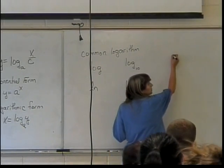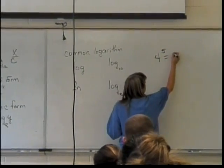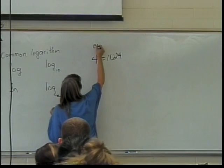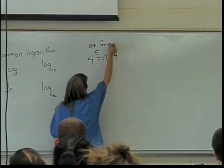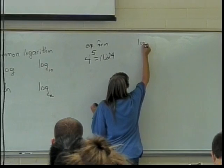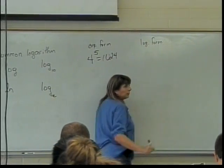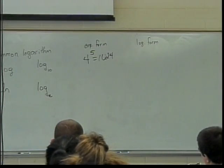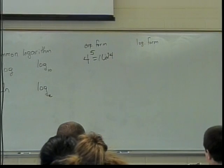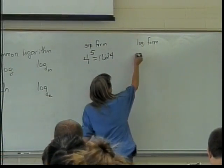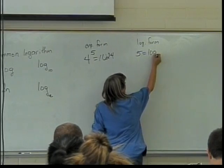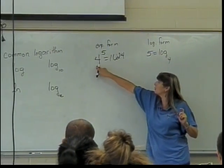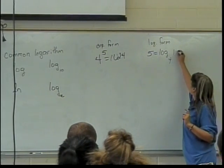So if I have the exponential form 4 to the 5th is equal to 1024, how would I write that in logarithmic form? This is my exponential form. How am I going to write that in logarithmic form? What will that look like? What equals it? So he told me it's 5, because that's the exponent, equals log what? Base 4, because that's the base of my log of that exponential of 1024.